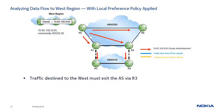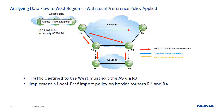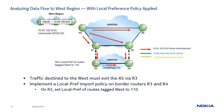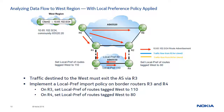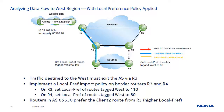In this example, AS65530 wants to send all traffic destined to routes originating in the west region of AS65520 through R3. AS65530 therefore implements a local preference import policy on R3 and R4. R3 sets the local preference of routes tagged as west to 110, and R4 sets it to 80. With these policies applied, R3 still prefers the route from R1, but R4 now prefers the route from R3 over the one from R2 because it has a higher local preference. As a result, traffic flows destined to client2 from both R3 and R4 now use R3 as the exit point from the AS.